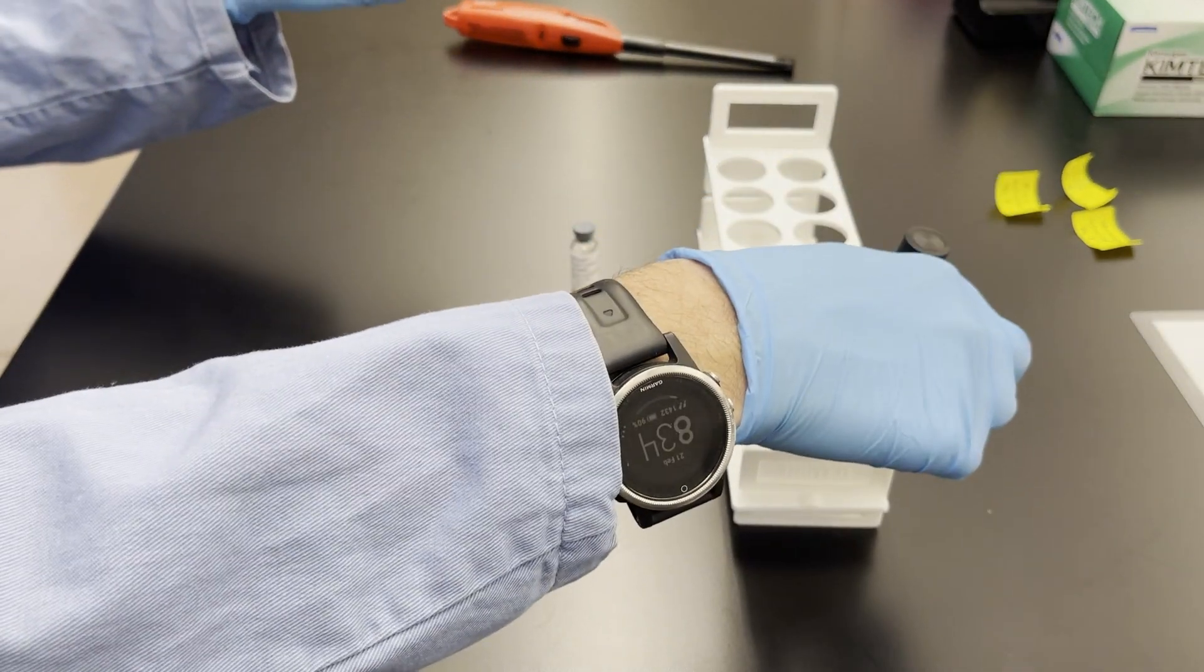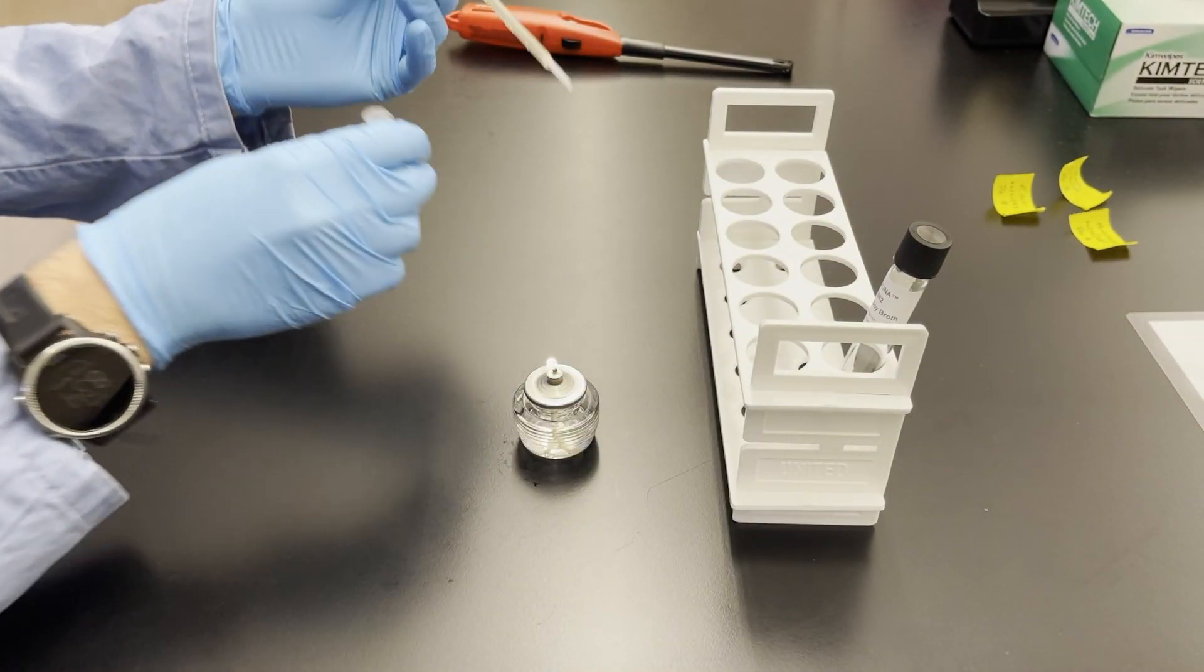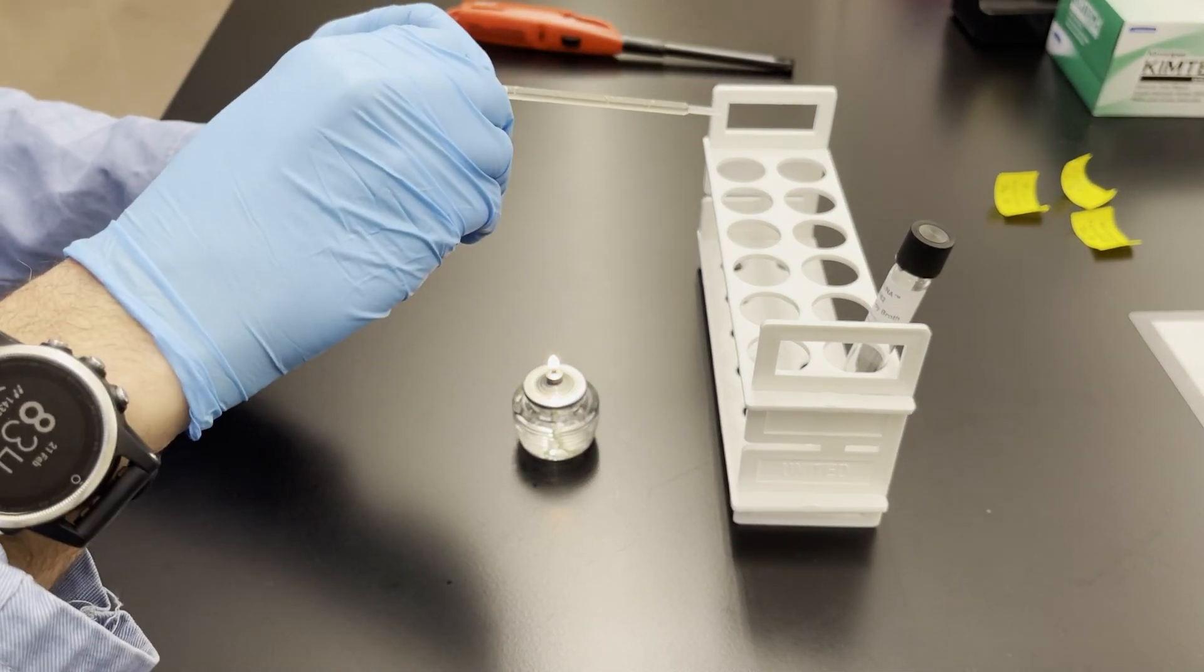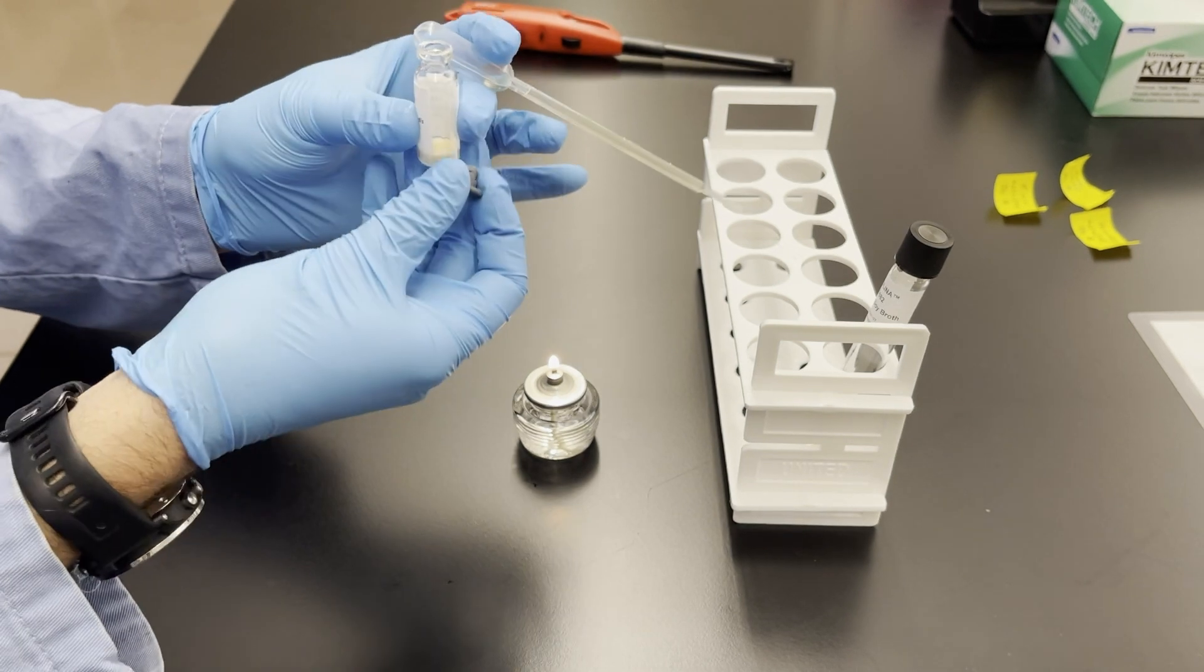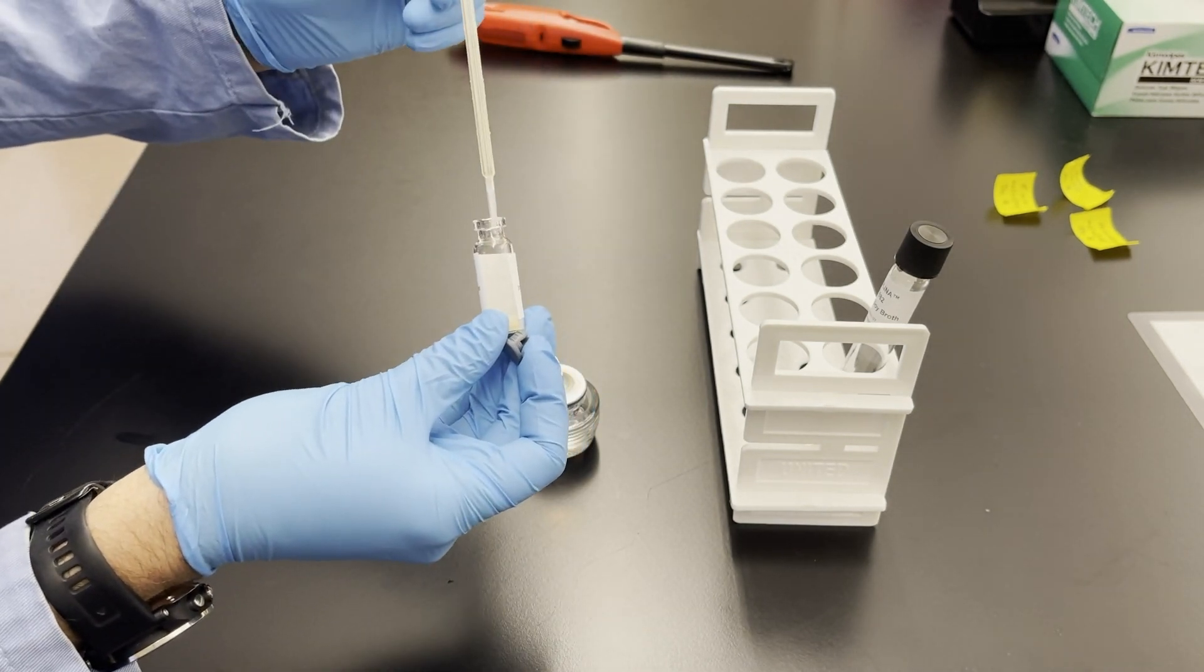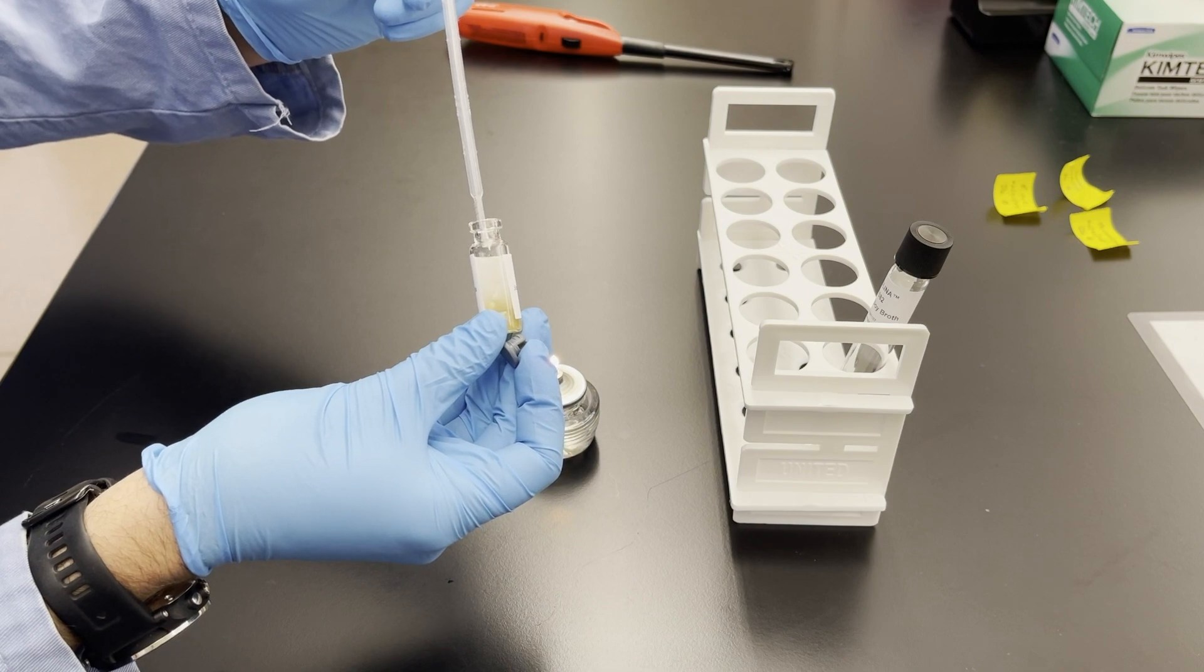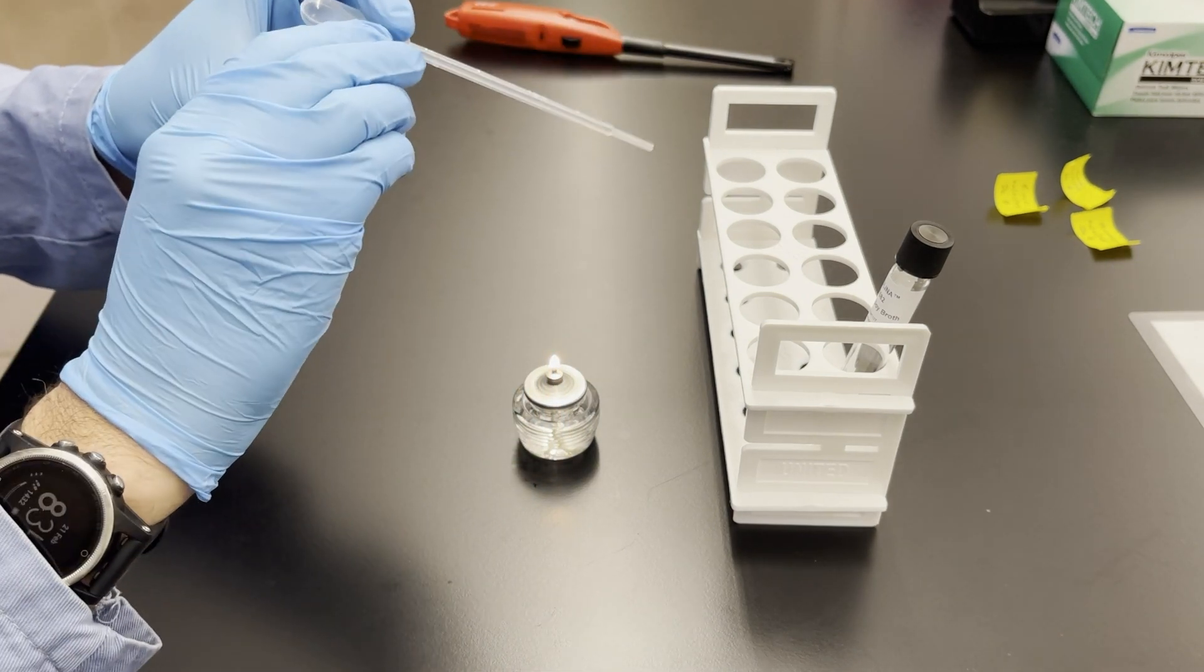And then before I close the tube I flame it again and then now I can open the rubber stopper and I'm going to place the broth that I have in the pipette into the freeze-dried bacteria.